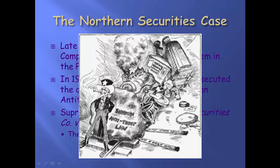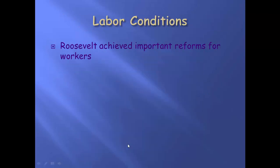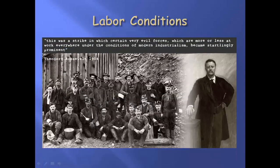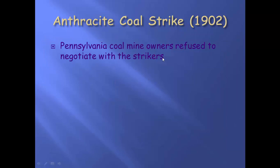So Teddy is regulating businesses and making sure we're protected as consumers. What does he do for labor? He achieves many important reforms for the working class. The biggest is going to be a coal strike. There is a coal strike in Pennsylvania — a bunch of workers decide to go on strike because they're working too many hours and not making enough money. And the coal mine owners will not negotiate with them, not going to give them their demands.